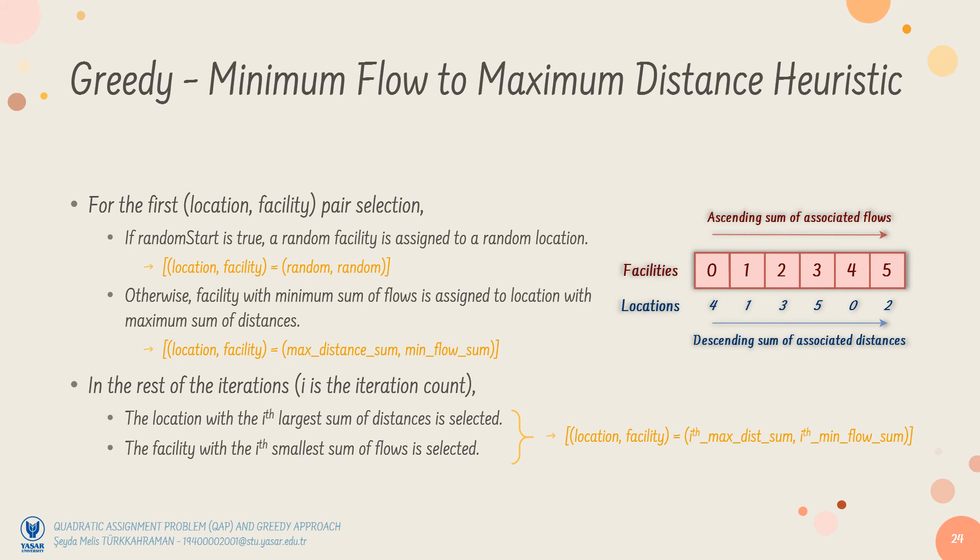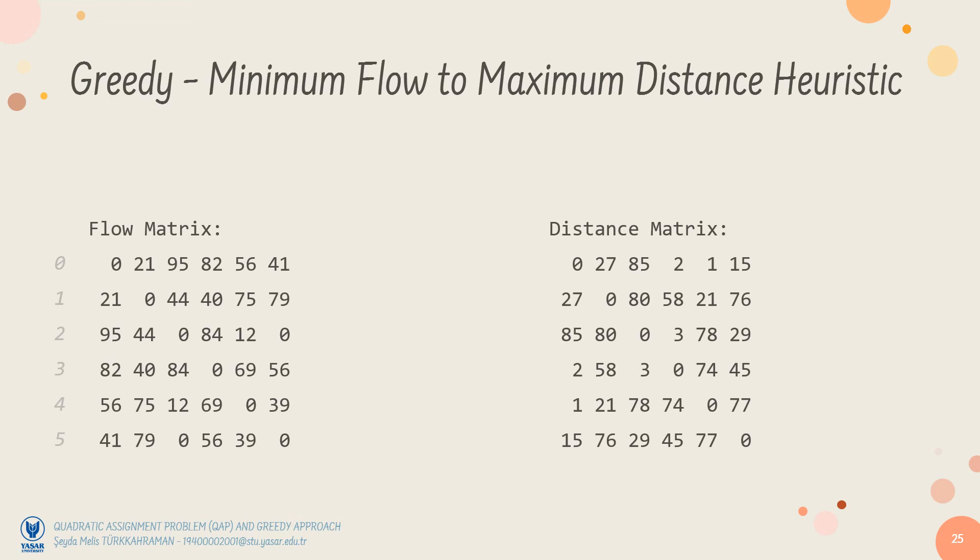The third heuristic is the minimum flow to maximum distance heuristic. It has a bit higher computational cost. However, slightly better solutions can be achieved. Here, we focus on the summation of all distances associated with each location and the summation of all flows associated with each facility. It is better to explain on the matrices. All rows are summed up in both matrices.